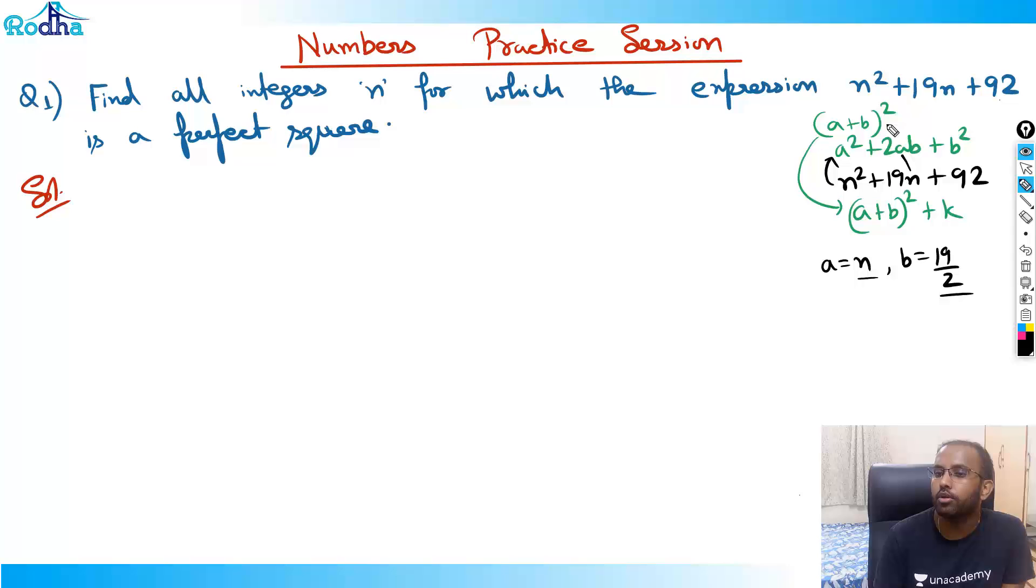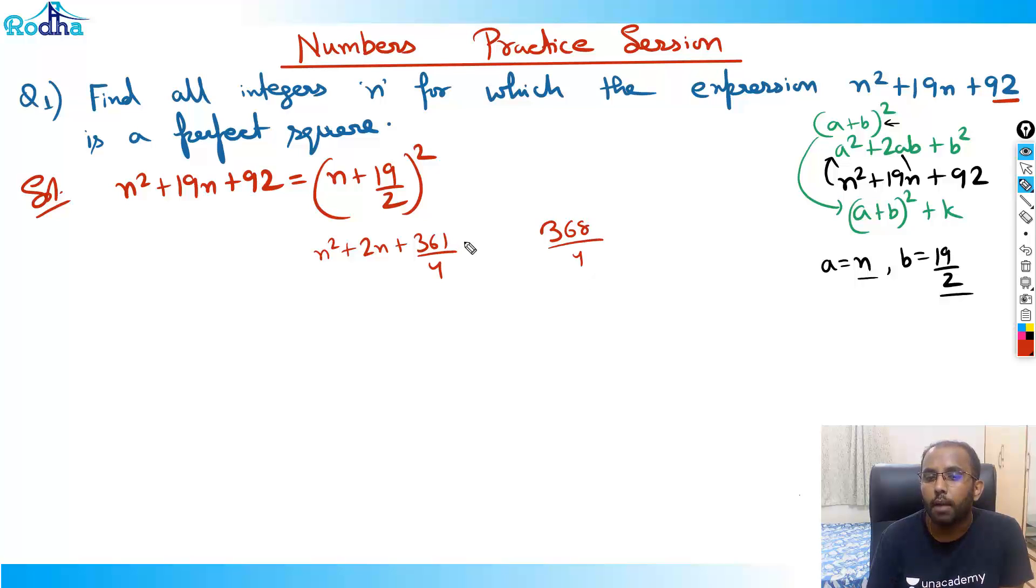I can write this n² + 19n + 92 as (n + 19/2)². Obviously something is left out. If you solve it, you get n² + 19n + 361/4. But the number here is 92. If we see 92 in terms of by 4, it is actually 368/4. That means I am left with 7/4 actually. So I should add 7/4 here. That's how you convert it into a perfect square form, because I wanted this expression to be a perfect square.